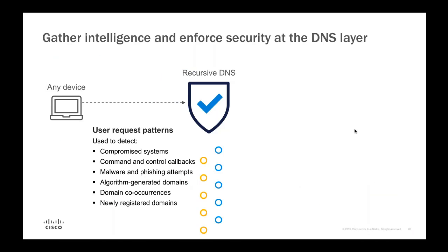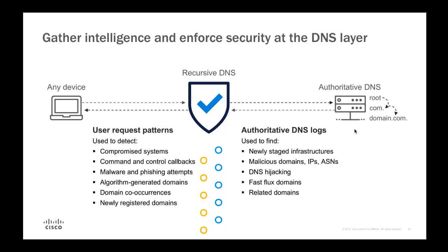With DNS visualization, we make many threat discoveries. Any device sends its DNS requests to Cisco Umbrella, and we analyze those requests to detect threats and anomalies — for example, determining if a system is compromised based on the types of requests it's making. If a device is making requests to a known bad domain, it's likely compromised. In the second half of the process, if our global cache doesn't contain a response, we recursively contact all authoritative nameservers for the requested domain, gathering authoritative logs from virtually every domain daily to find newly staged infrastructures.